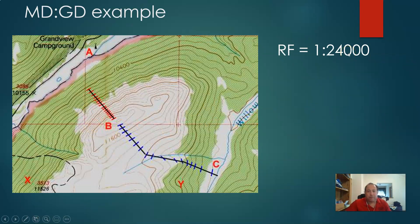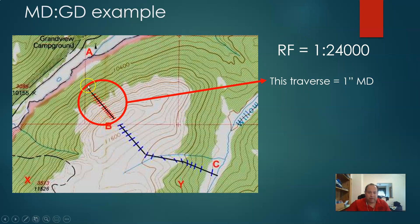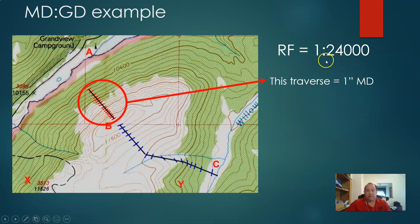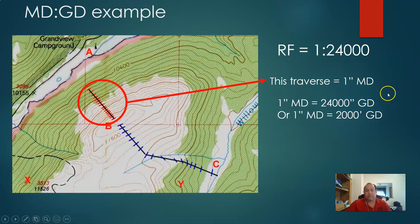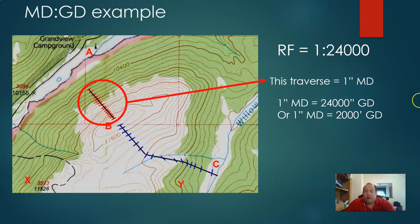Here is our basic topographic map with a USGS 1 to 24,000 representative fraction, or RF. Here is the area we're going to try and walk. It measures out to 1 inch of map distance. So 1 inch equals 24,000 inches, or dividing by 12, that's 2,000 feet. So the flat ground distance here would be 2,000 feet. But notice — we've got contour intervals, a bunch of them close together here and some farther spread out. That means there's definitely slope involved, so we want to look at this much more in depth.